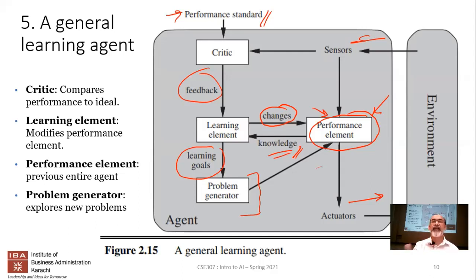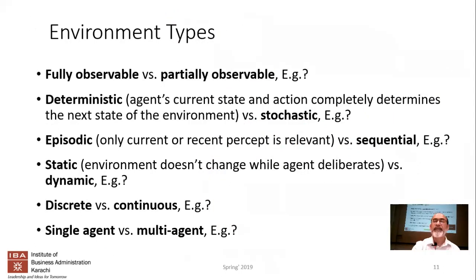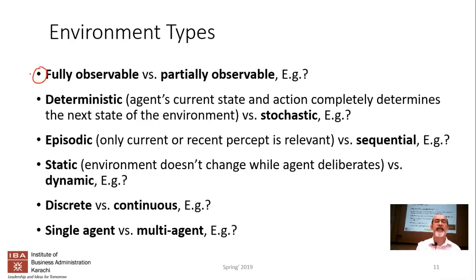Those are broadly the five agents we've spoken about. Now let's try to figure out the environment — remember we spoke about the four things in PEAS. The next thing we'd like to discuss is the environment, which can be of different types.